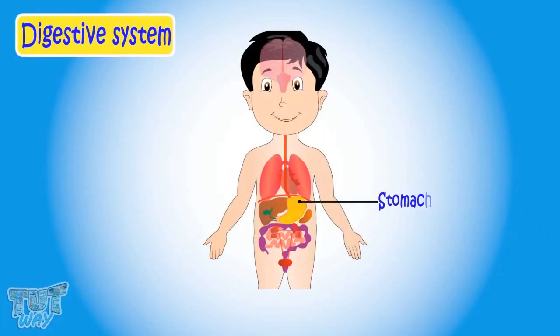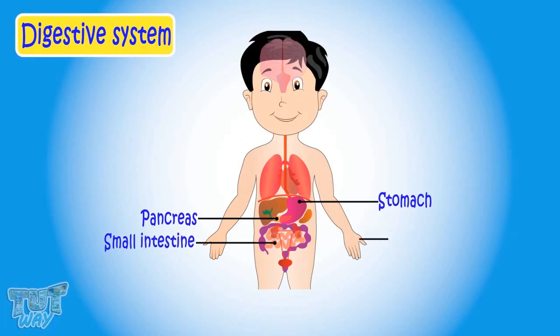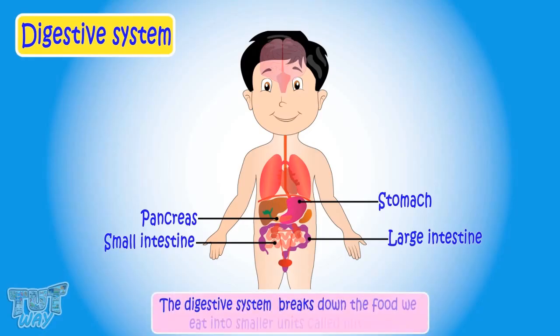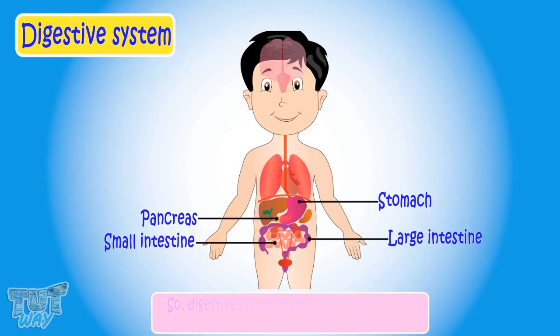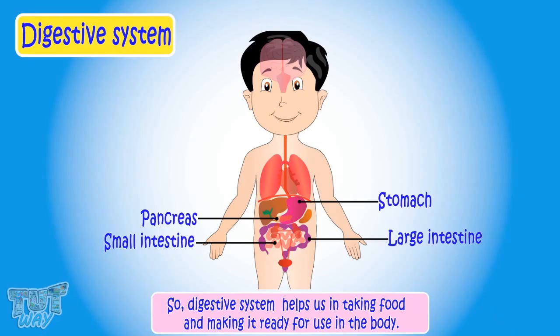Organs like the stomach, pancreas, small intestine, and large intestine work together to make our digestive system. The digestive system breaks down the food we eat into smaller units called nutrients. The nutrients are then absorbed into the blood, so the digestive system helps us in taking food and making it ready for use in the body.